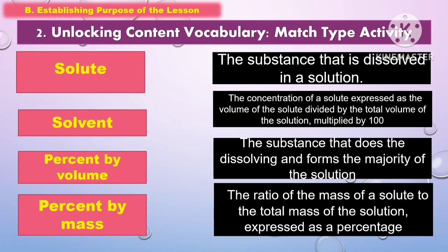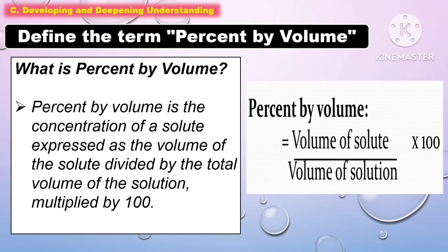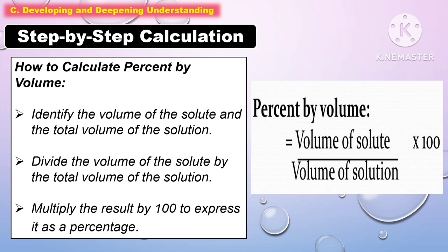For unlocking content vocabulary, we are going to use a match type activity. In developing and deepening understanding, first we are going to define the term percent by volume. Percent by volume is the concentration of a solute expressed as the volume of the solute divided by the total volume of the solution, multiplied by 100.